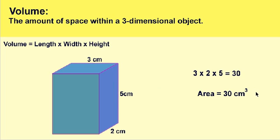So again, in order to find the volume of a three-dimensional object, we just have to multiply the length by the width by the height to get the answer. In this case, it's three times five, which is 15, and 15 times two, which gives us 30.